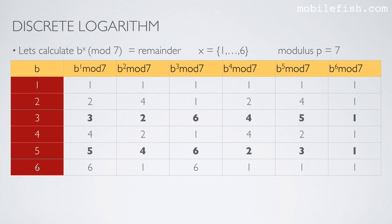Here are different base values 1, 2, 3, 4, 5, and 6, and here are different powers: b to the power of 1 mod 7, b to the power of 2 mod 7, b to the power of 3 mod 7, etc.